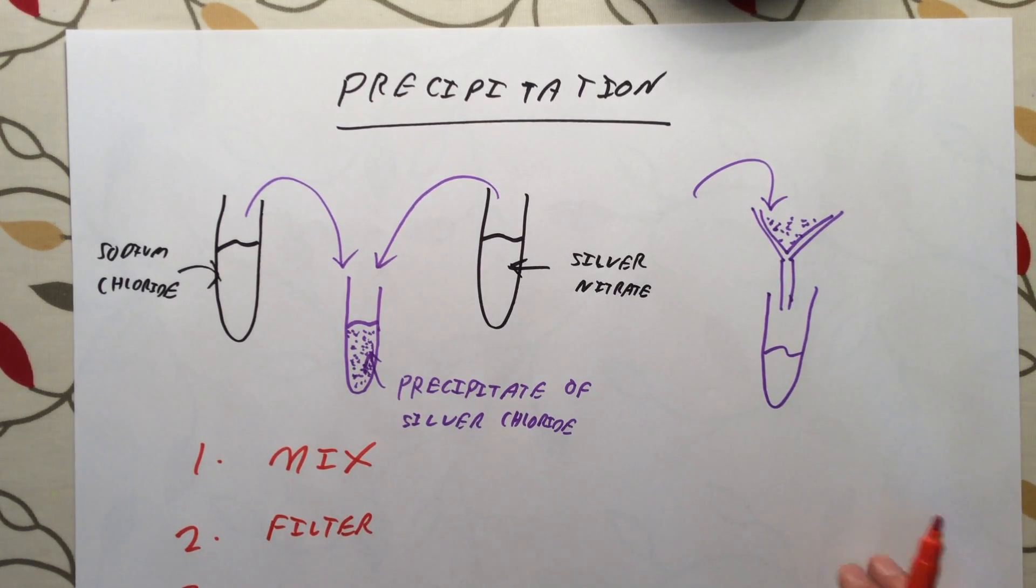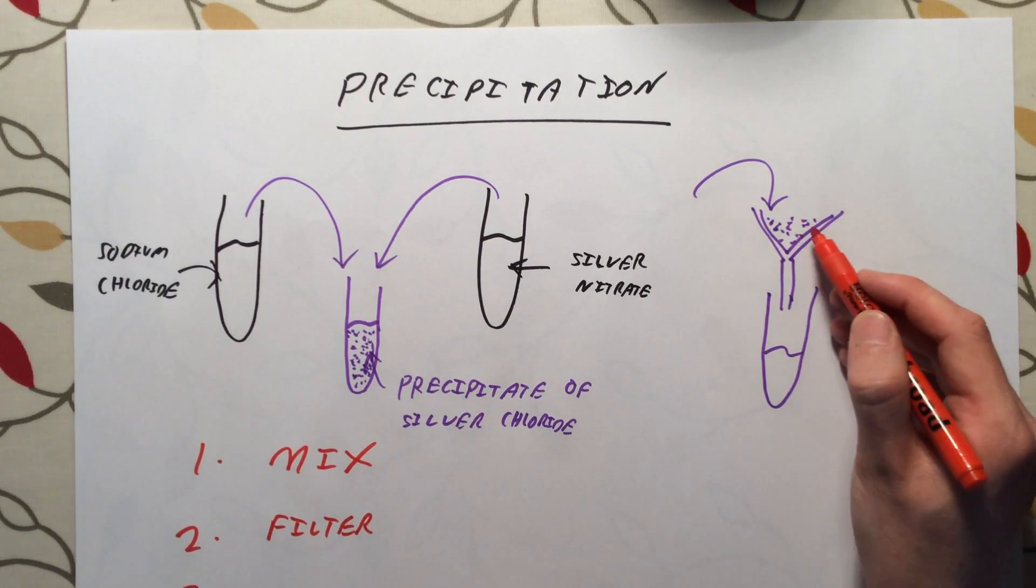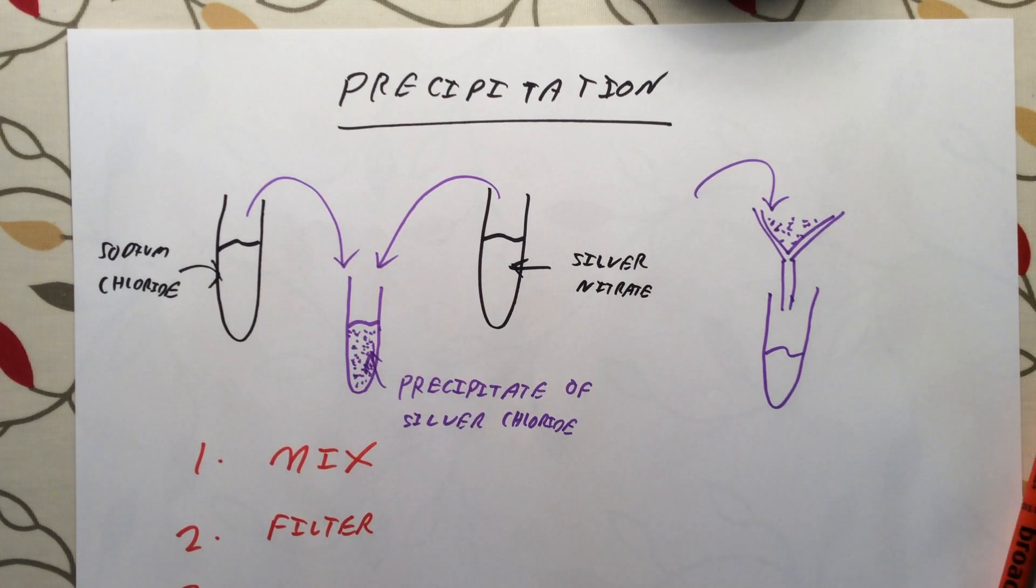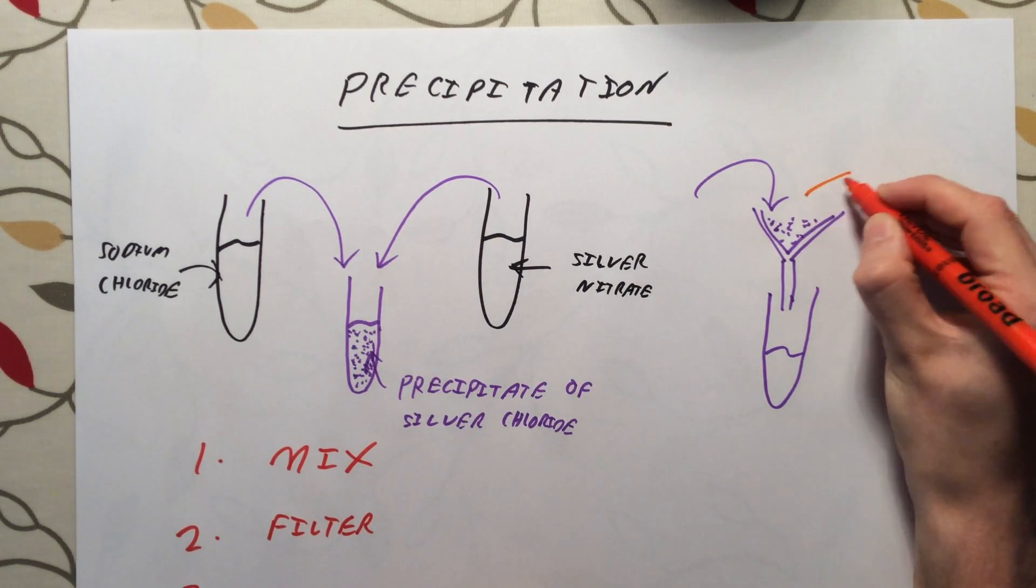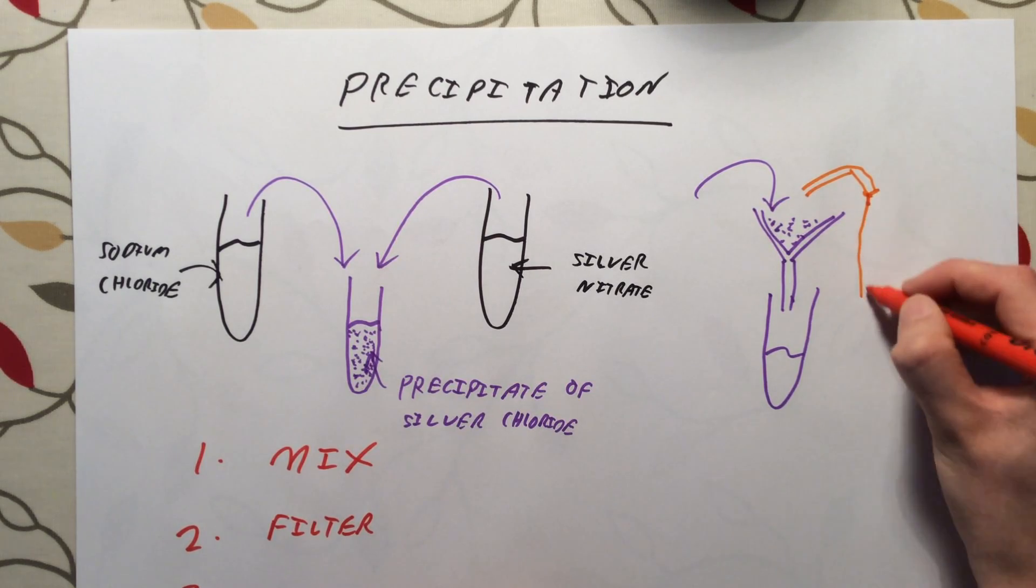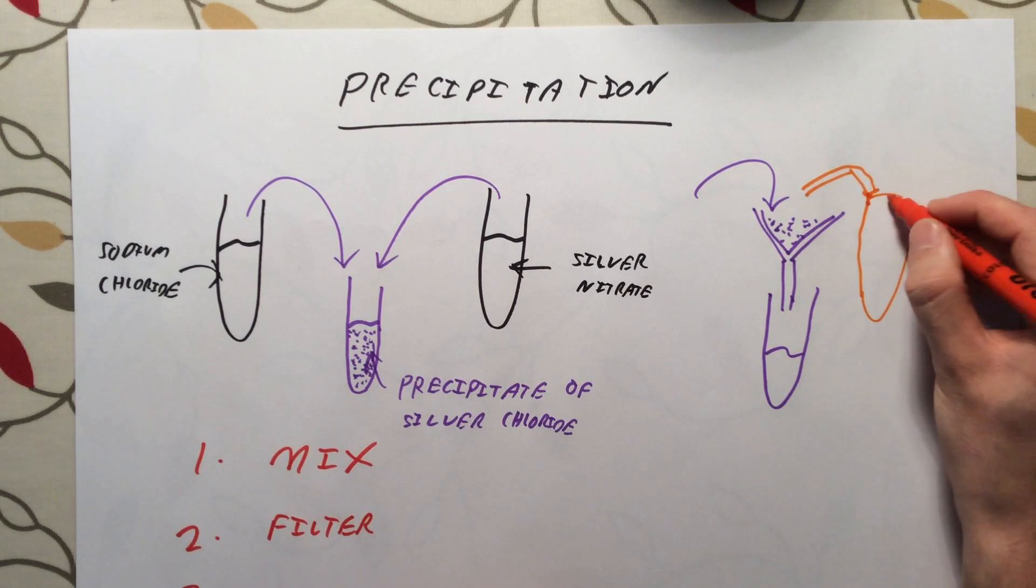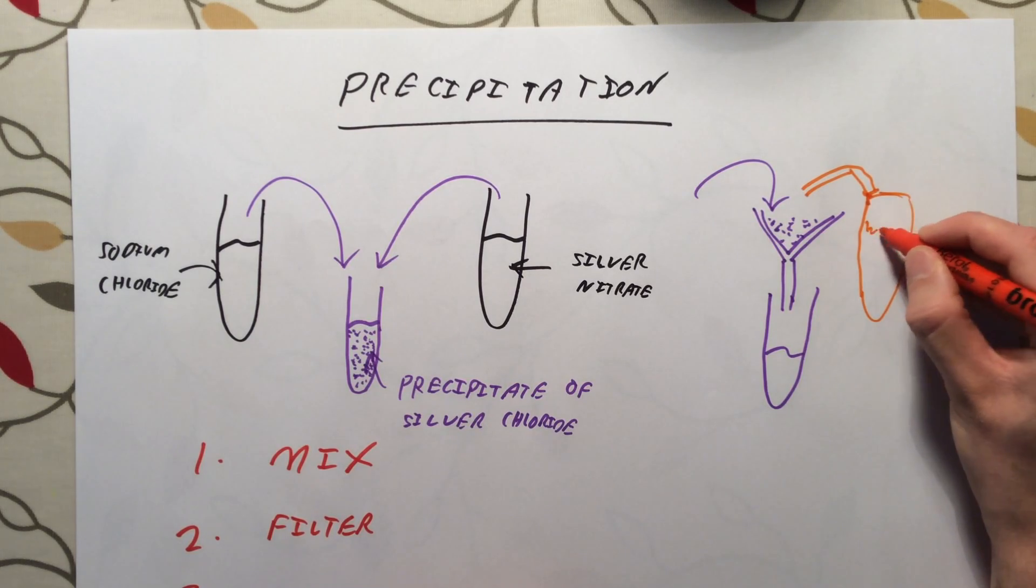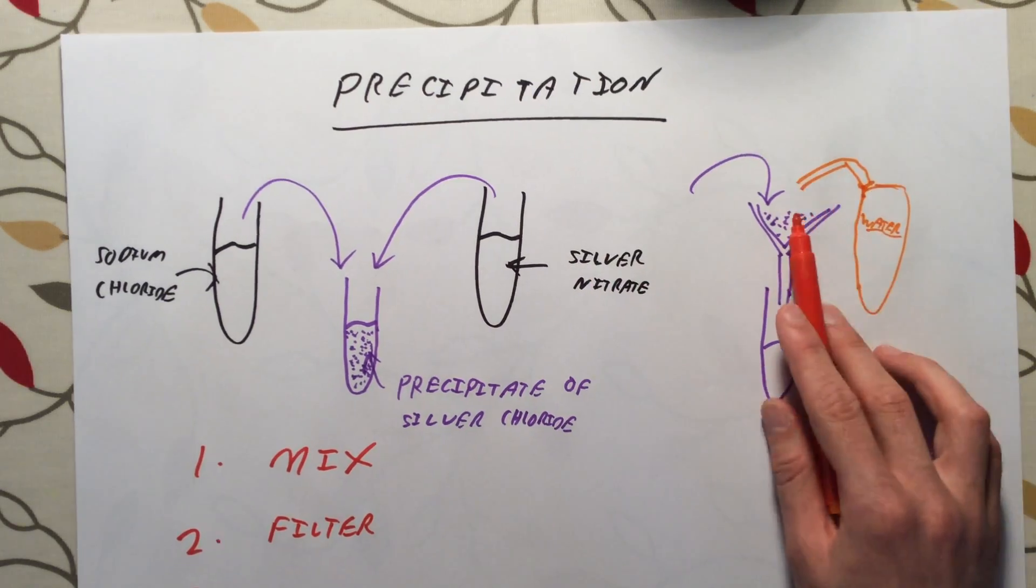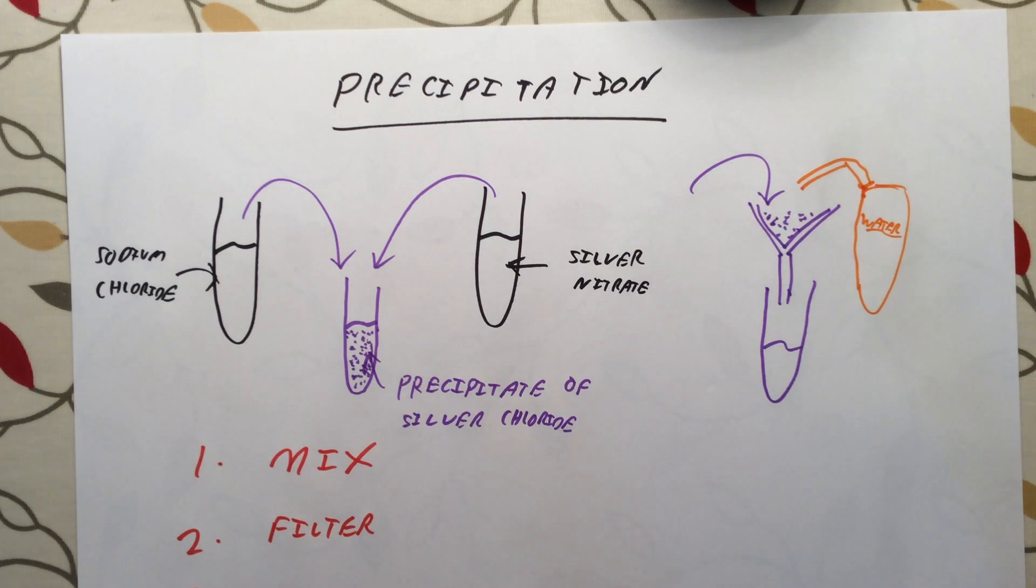In order to get a pure sample, we need to wash off any impurities, any other chemicals still on here. We are going to rinse through with a bit of water. This is supposed to be a water bottle. That's gone horribly wrong. Never mind. Distilled or pure water. Once we've filtered it, we are going to wash it with water. So mix, filter, wash.